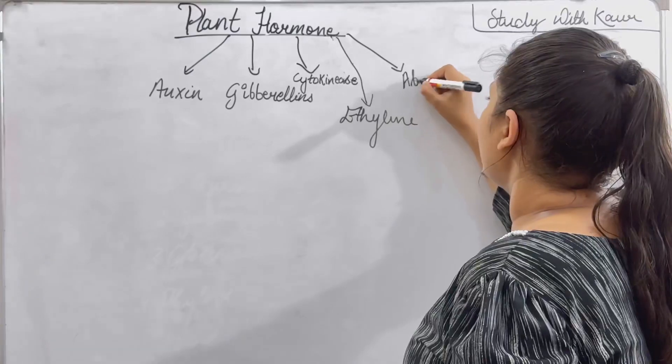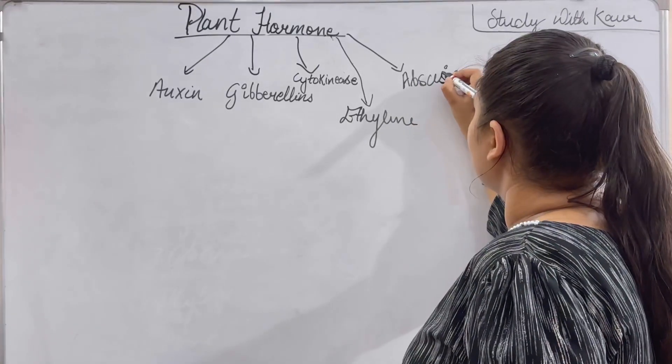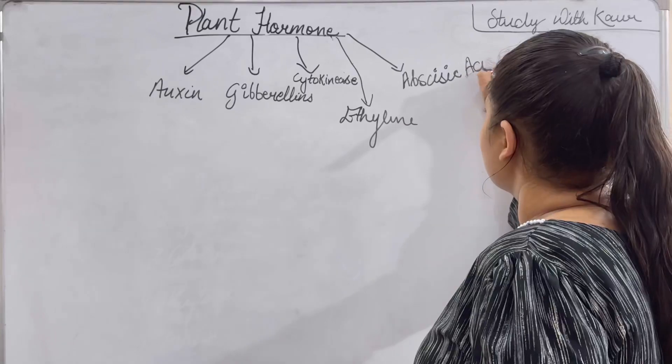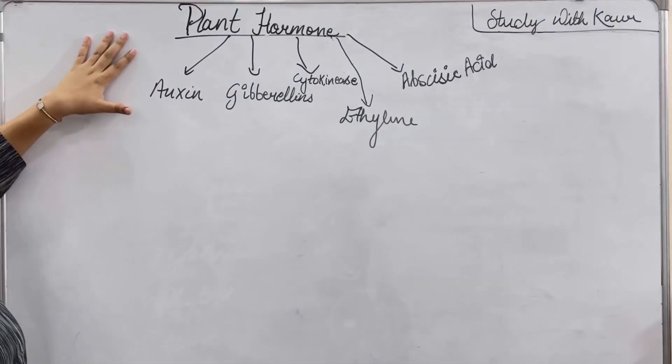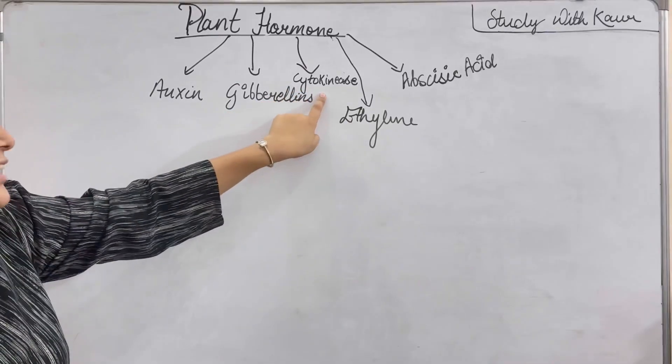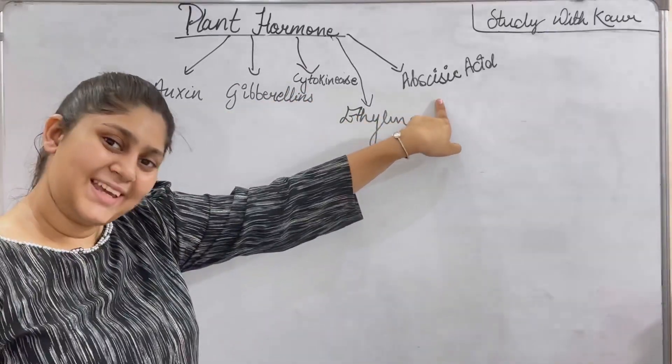That is ABA. So, the five types of plant hormones are auxin, gibberellin, cytokinins, ethylene and abscisic acid.